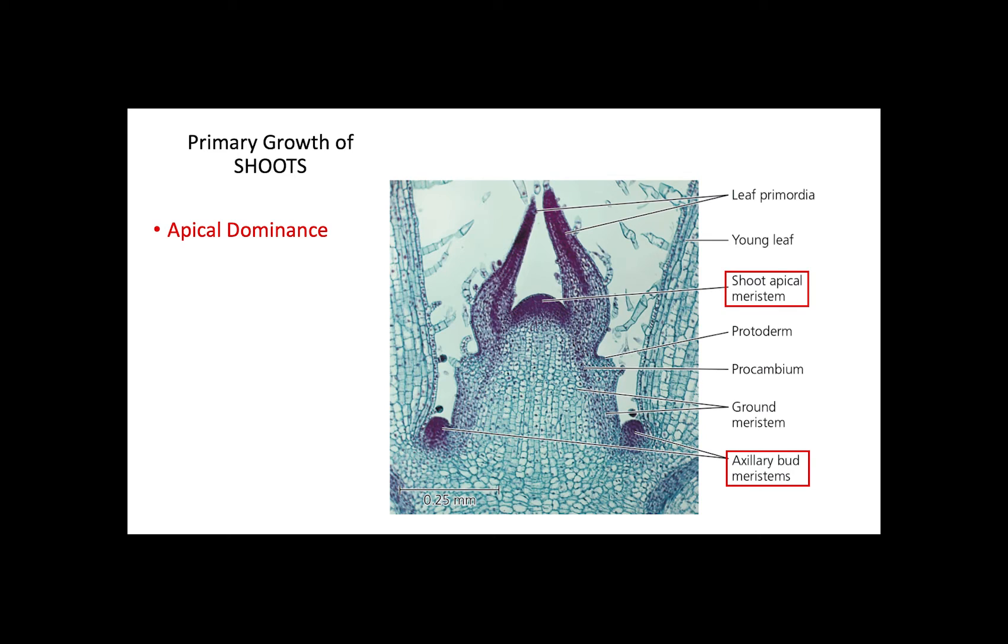The term apical dominance corresponds to the ability of apical meristems to inhibit auxiliary bud meristems when these are in close distance. The closer they are, the more inhibited auxiliary buds get. Contrarily, if the apical meristem is damaged, then auxiliary buds become more active and give rise to lateral shoots.